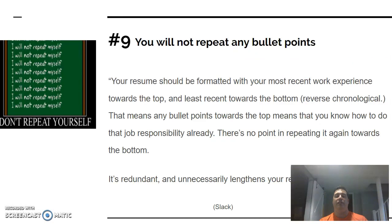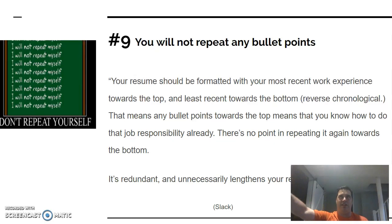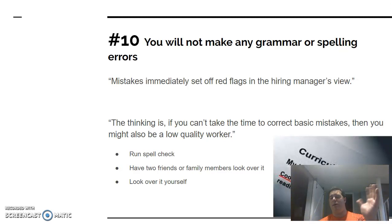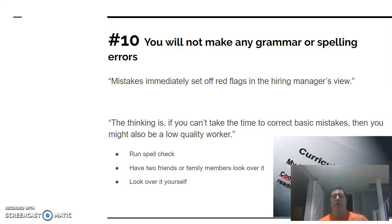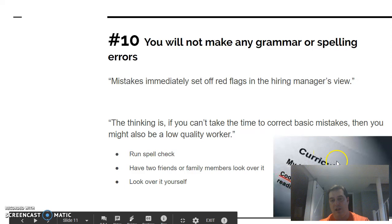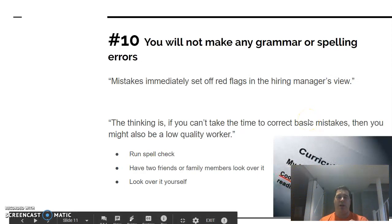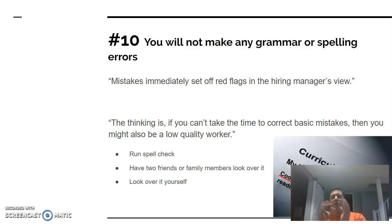Number nine: you will not repeat bullet points. If under one job you're already showing leadership and communication skills, you don't need to repeat that under a later job. Keep it fresh and don't be redundant. Number ten: you will not make any grammar or spelling errors. Use Grammarly, run spell check, have two friends or family members look it over, and review it yourself. There's an actual resume here where someone listed their interest as 'cooking dogs' — that's the kind of error you want to avoid.